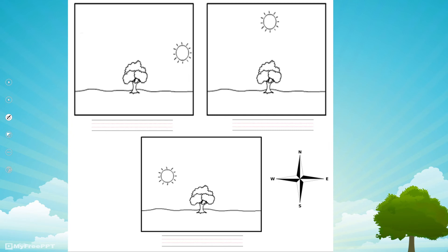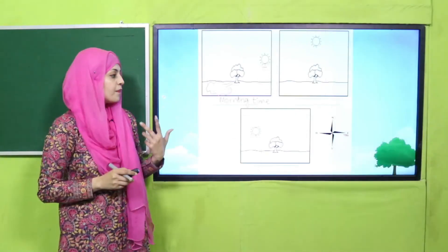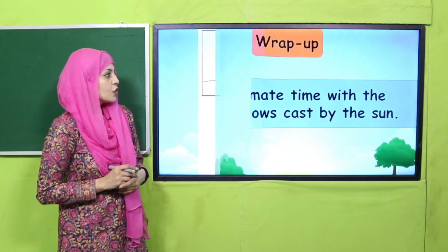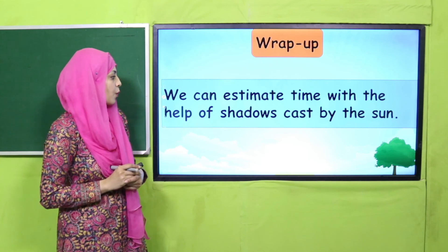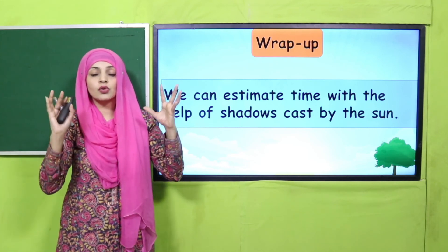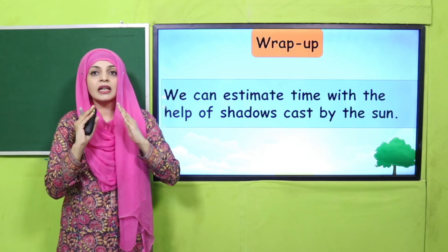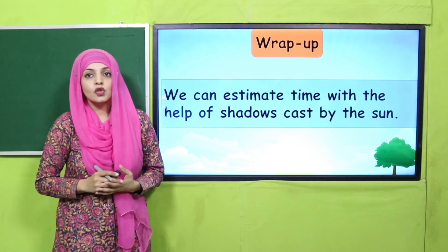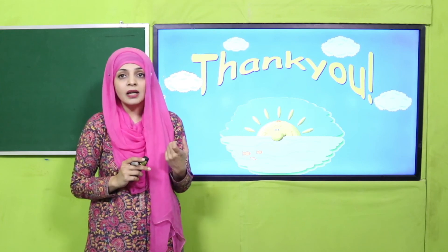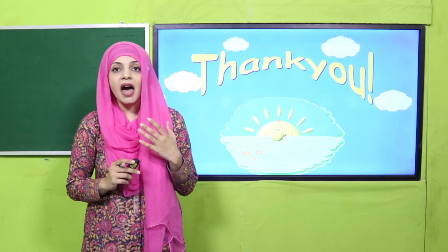Your homework for today is a worksheet. Here you can see the sun is in the east according to the compass and the shadow will be towards the west and will be longest - so this is morning time. You will do the rest showing morning, noon, and afternoon and draw the shadow also. Your wrap-up for today: we can estimate time with the help of shadows cast by the sun. Today you have learned a new thing about the sun and its use. Keep everybody around you safe, have a good day, and Allah Hafiz.